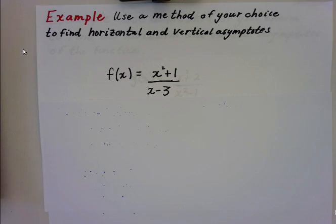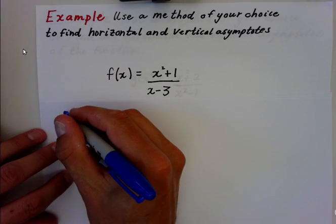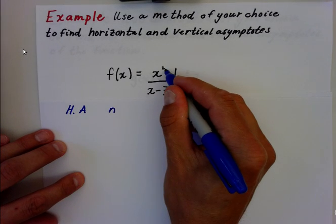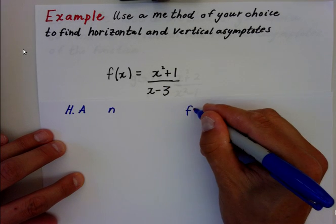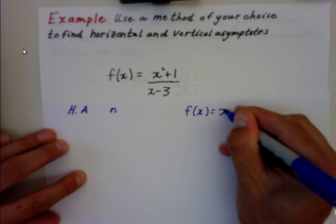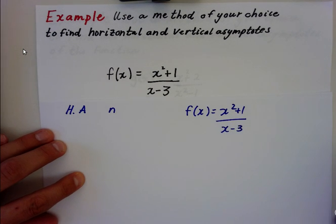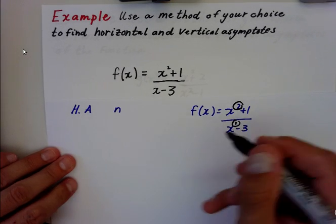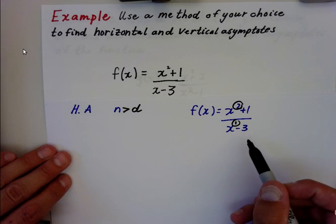Now, let's look at the horizontal asymptote. There are some specific rules here. For the horizontal asymptote, remember there's 3. In this case, if I rewrite this as X squared plus 1 over X minus 3, the numerator has a larger power than the denominator. So the numerator is greater than the denominator by power.